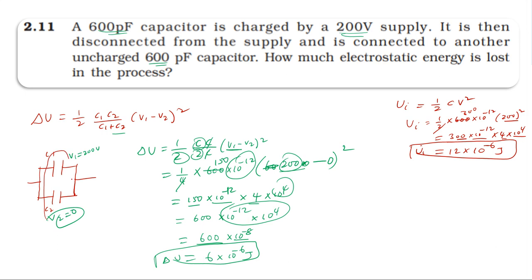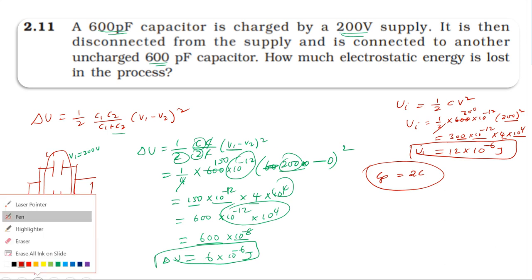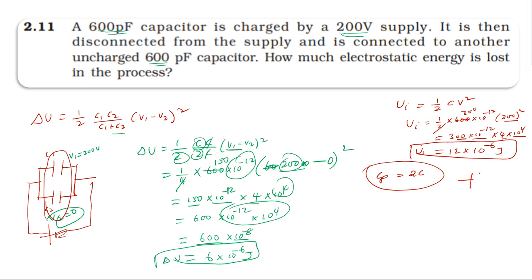Finally, the effective capacitance in parallel is 2C. The common potential V dash equals Q divided by total capacitance. This is Q by 2C. The charge Q is from the initially charged capacitor. The second capacitor is uncharged, so charge redistributes, giving a new common potential V dash equal to Q divided by the total capacitance.